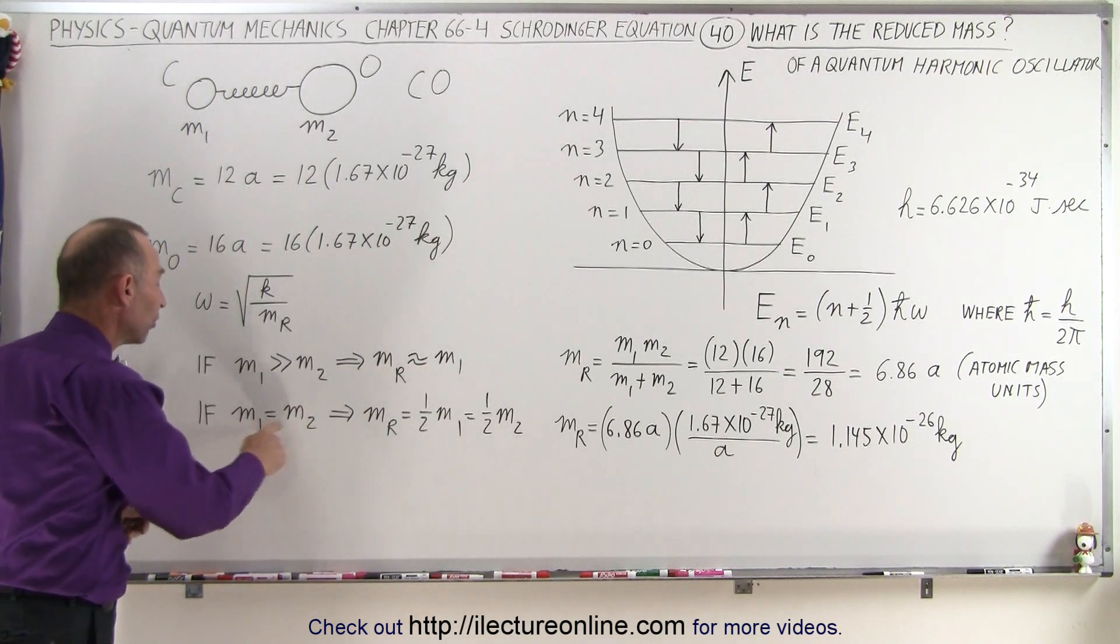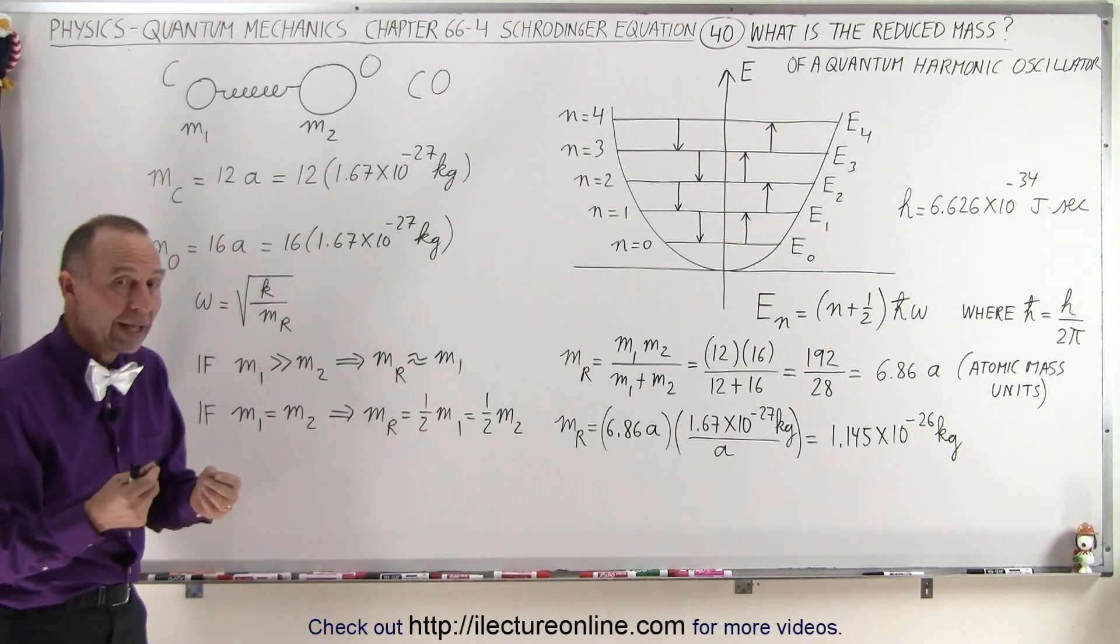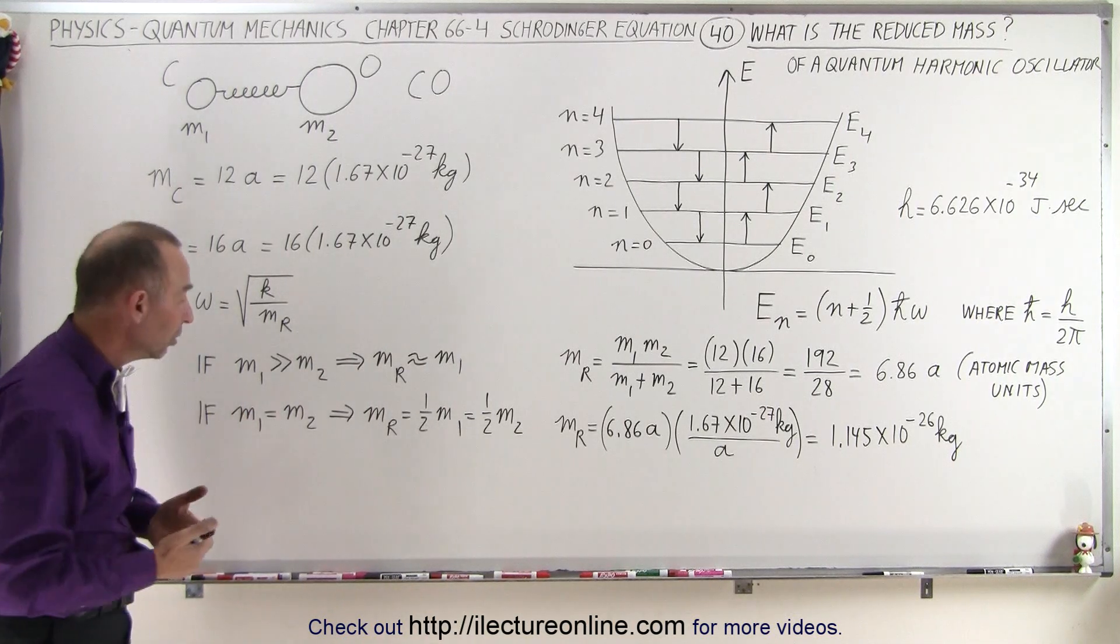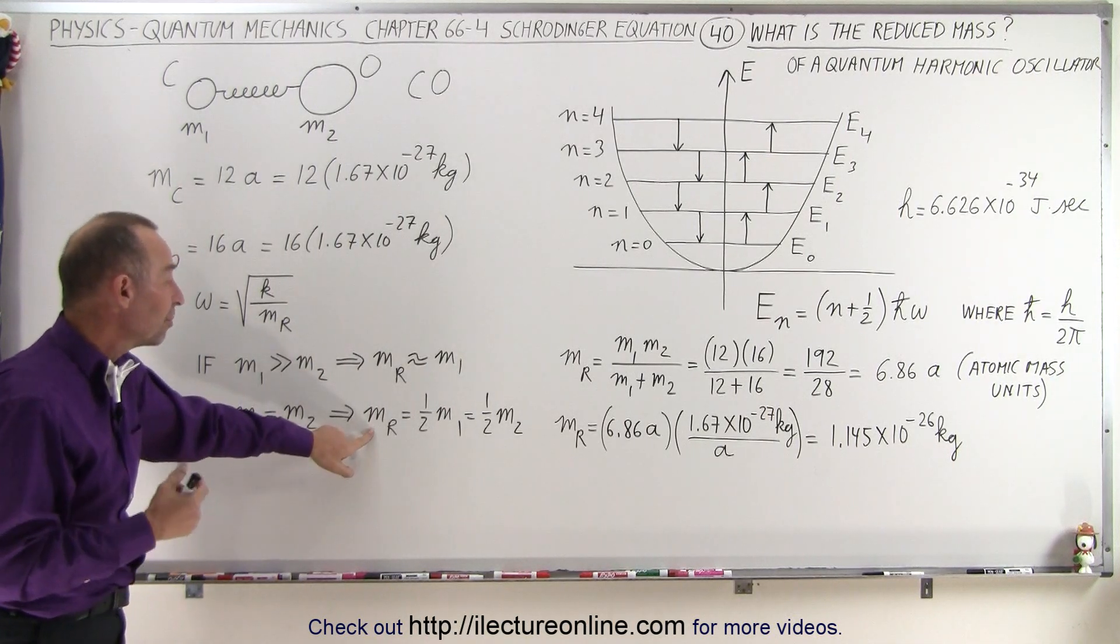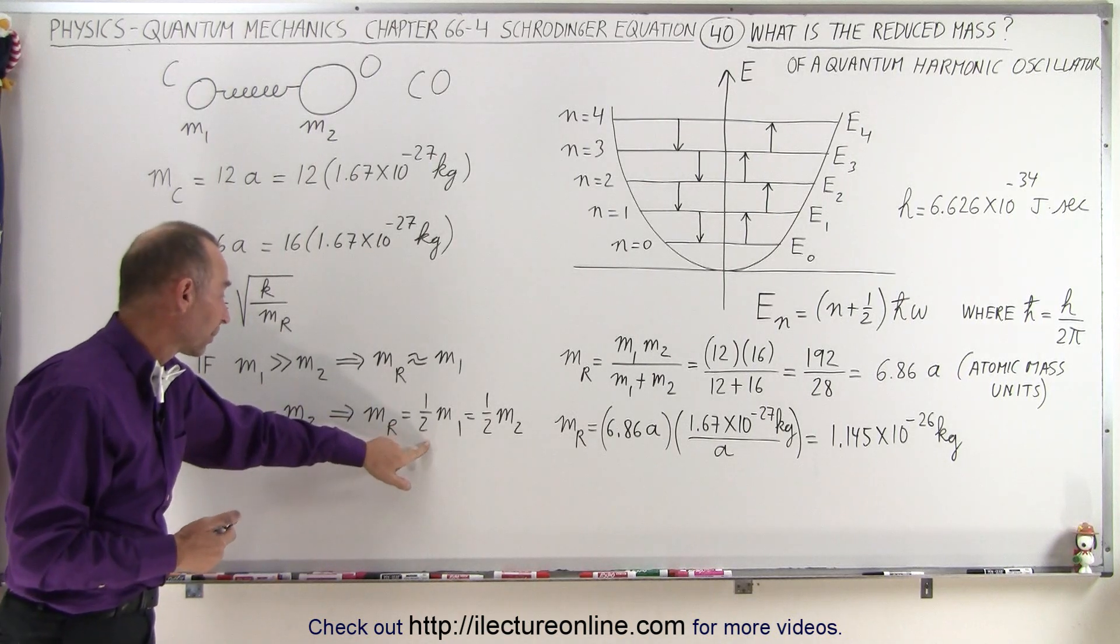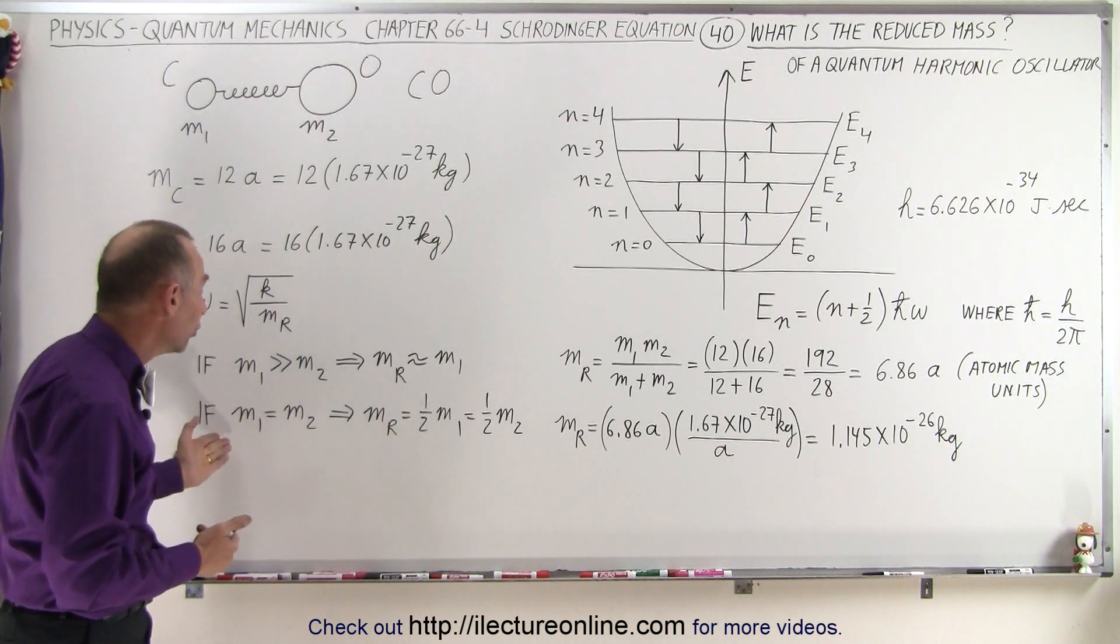But if the masses are equal to each other, for example, if we had a diatomic molecule like oxygen or nitrogen, then the reduced mass would simply be half the mass of one or the other.